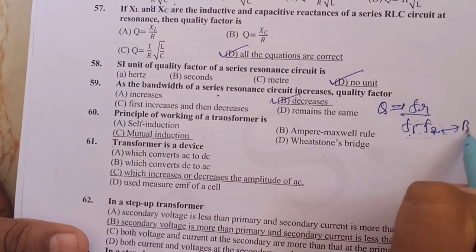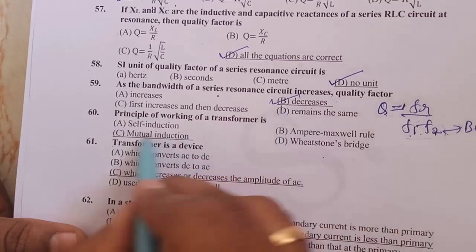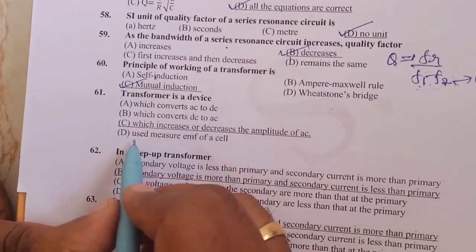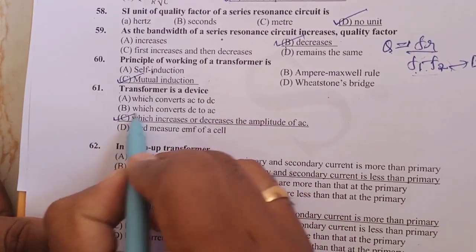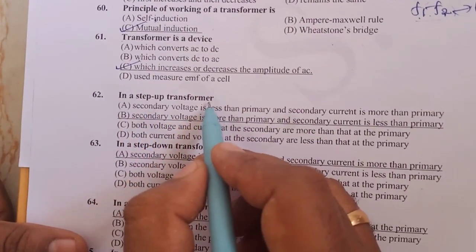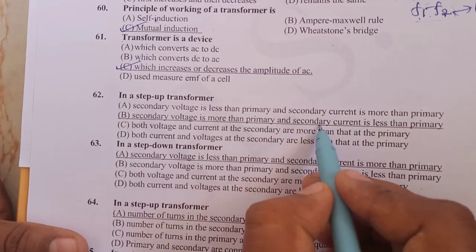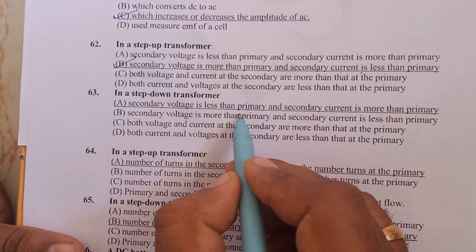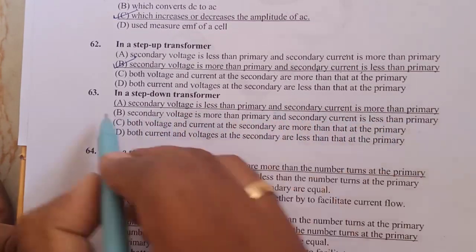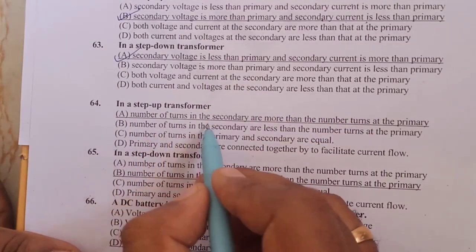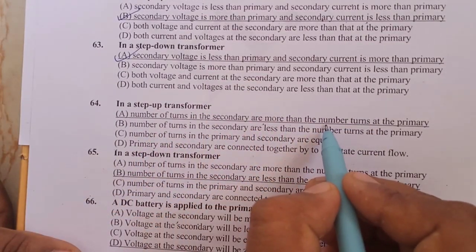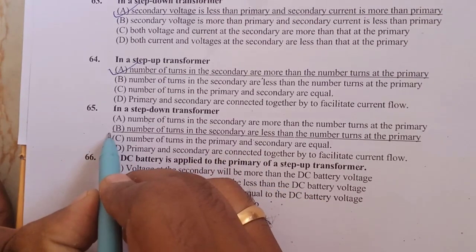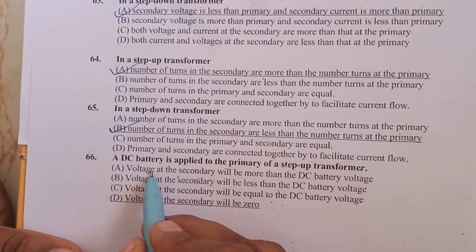Bandwidth (f₁ minus f₂) is called bandwidth. If bandwidth increases, quality factor decreases. Principle of working of a transformer is mutual inductance. A transformer is a device which increases or decreases the amplitude of alternating current or voltage. In a step-up transformer, secondary voltage is more than primary and secondary current is less than primary. In a step-down transformer, secondary voltage is less than primary and secondary current is more than primary. In a step-up transformer, number of turns in secondary are more than in primary. In a step-down transformer, number of turns in secondary are less than in primary.